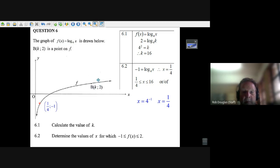When x is k, the y value is two. Calculate k. Well, all we do is substitute: the y value is two, that means f of x is two, and the x value is k, so we put a k there.